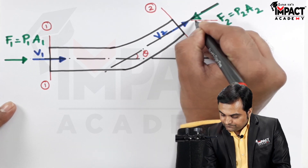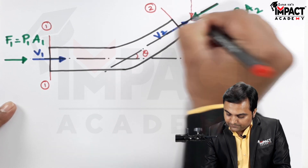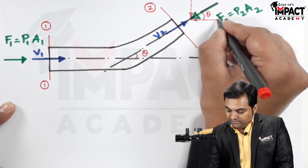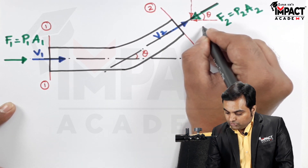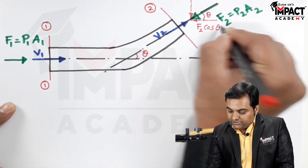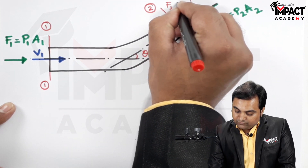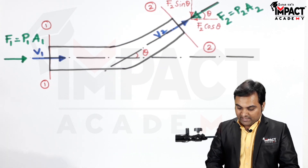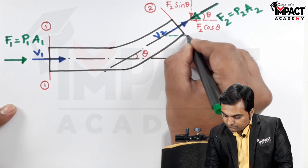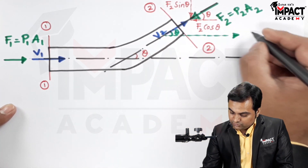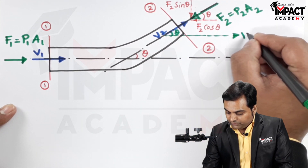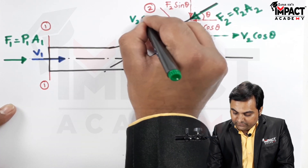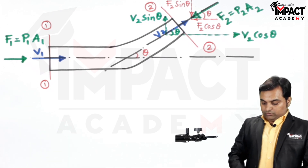One would be the horizontal component and the other would be a vertical component, inclined at the angle theta. So the horizontal component will be F2 cos θ and the vertical component will be F2 sin θ. Similarly, velocity V2 is also inclined at angle theta, so it also has two components: V2 cos θ (horizontal) and V2 sin θ (vertical). So there are two pressure forces and the direction of velocity has been changed.